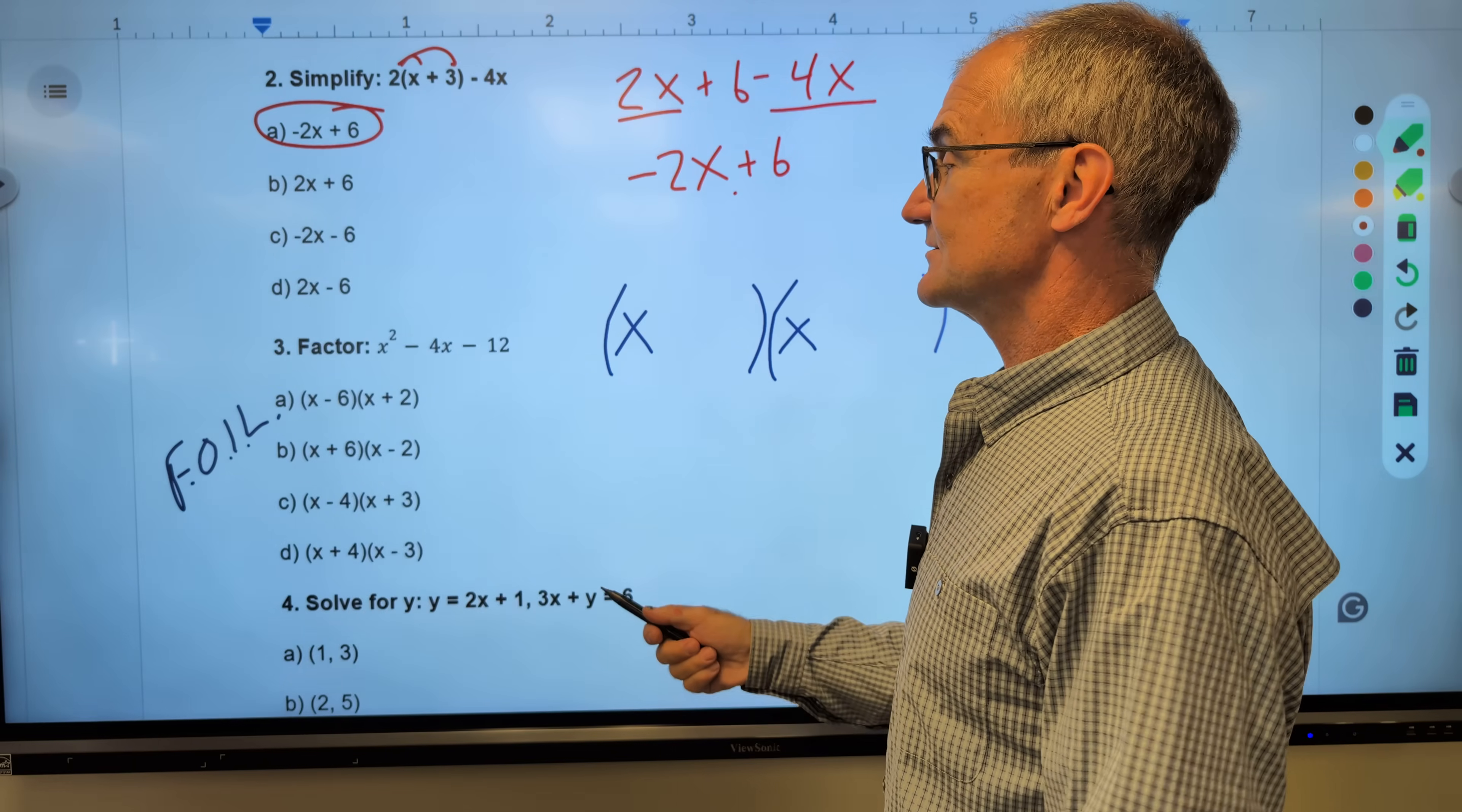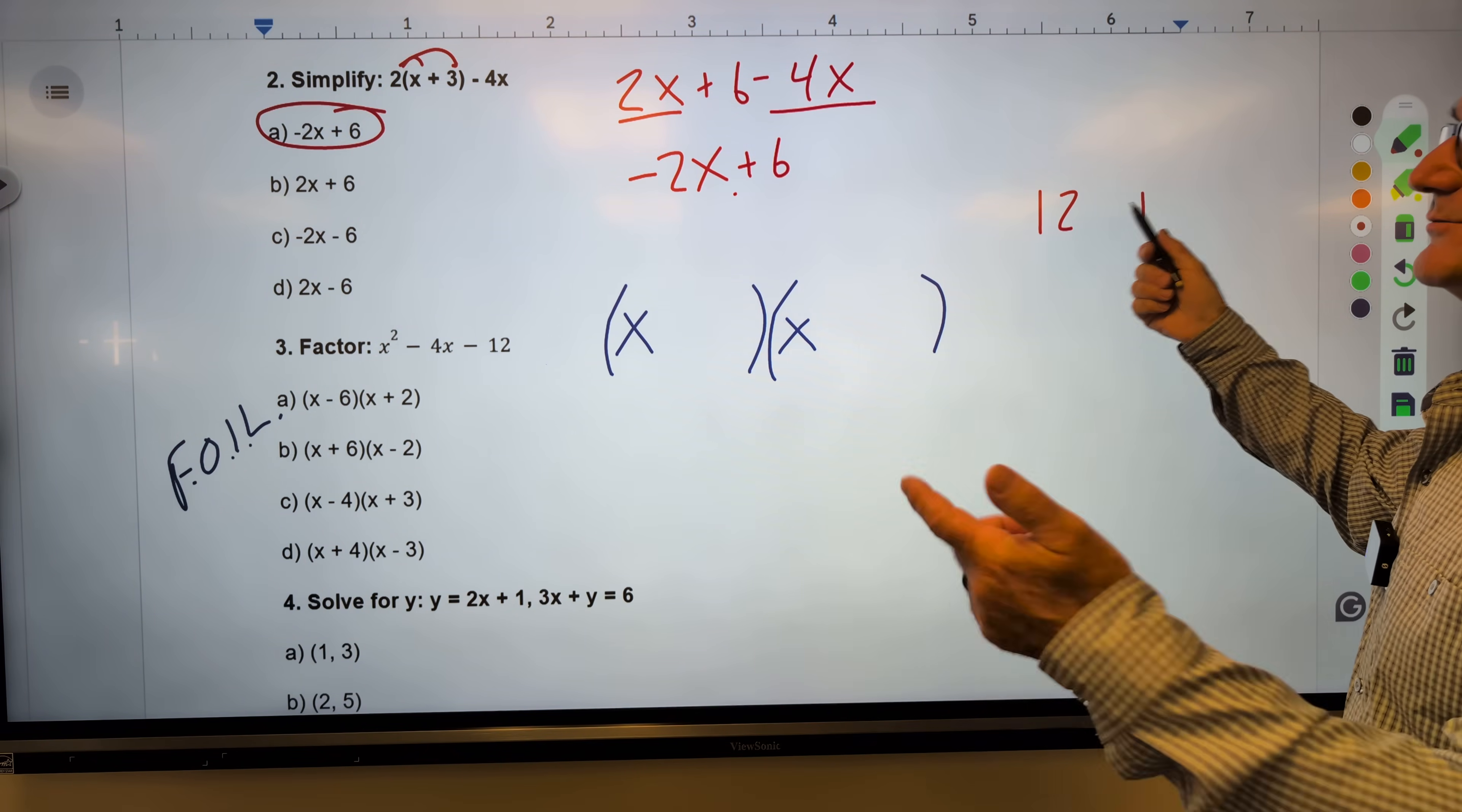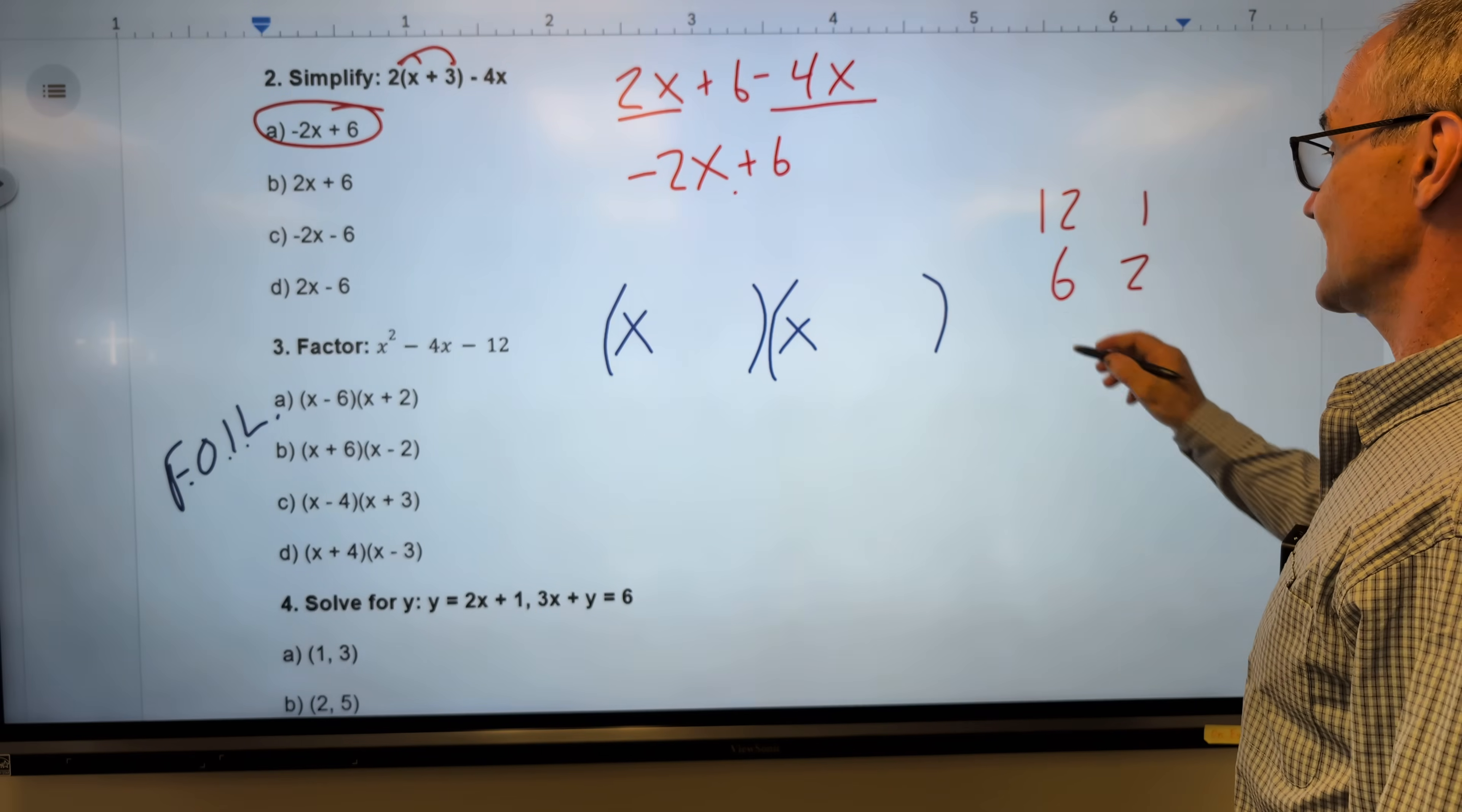Now I'm looking for the factors of 12 when multiplied together give me a 12, but when added together give me a 4. I could have a 12 and a 1. They multiply together, give me a 12. But there's no way I could add or subtract these to get a 4. 12 plus 1 is 13, 12 minus 1 is 11. Other factors of 12 are a 6 and a 2. They equal 12, but when I add them, 6 minus 2 is 4. And 6 plus 2 is 8. So I can get a 4 out of this.